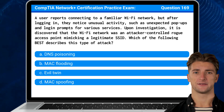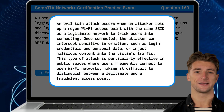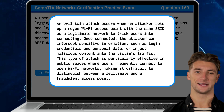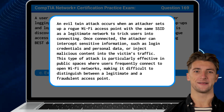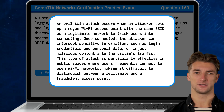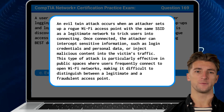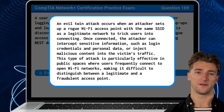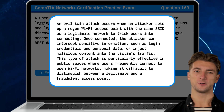The answer is C: Evil Twin. An evil twin attack occurs when an attacker sets up a rogue Wi-Fi access point with the same SSID as a legitimate network to trick users into connecting. Once connected, the attacker can intercept sensitive information such as login credentials and personal data, or inject malicious content into the victim's traffic. This type of attack is particularly effective in public spaces where users frequently connect to open Wi-Fi networks, making it difficult to distinguish between a legitimate and a fraudulent access point.